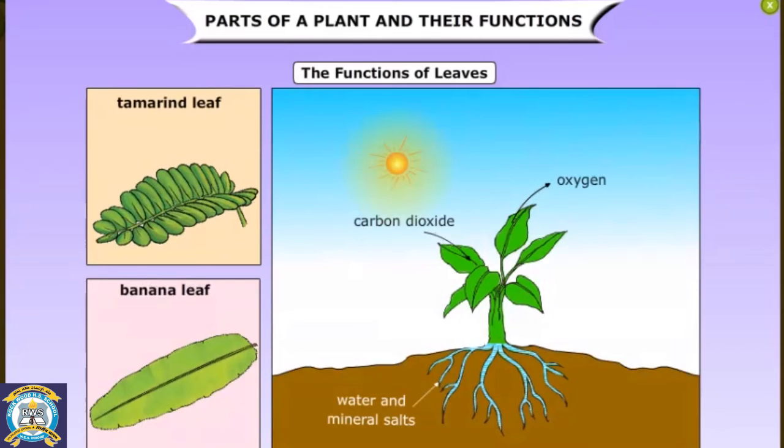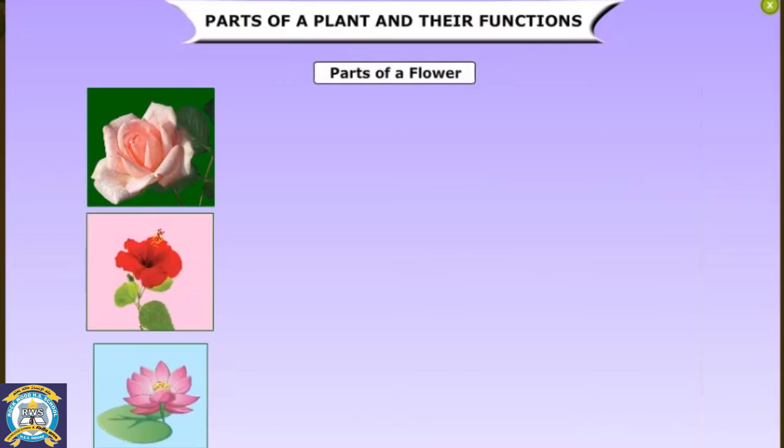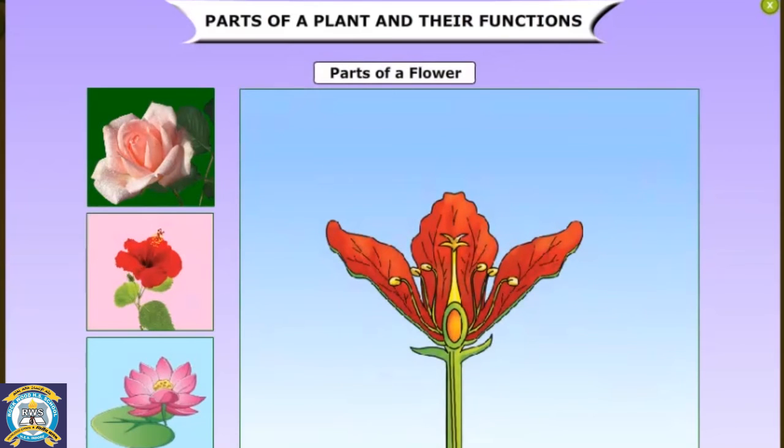Flowers come in many shapes, sizes, and colors. Flowers have four main parts: sepal, petal, stamen, and pistil. The flower is attached to the tip of a stem or stalk. The carpels found inside flowers turn into fruits.